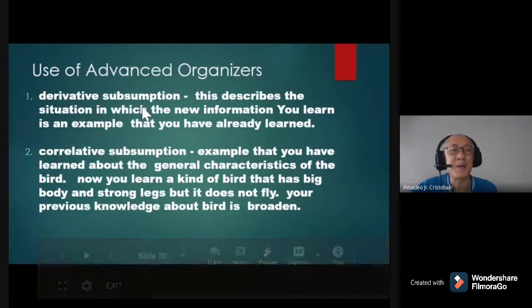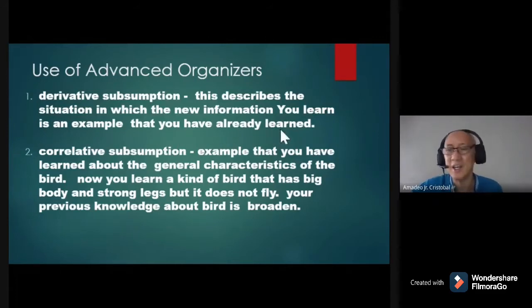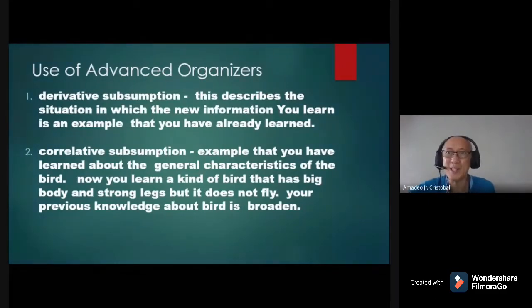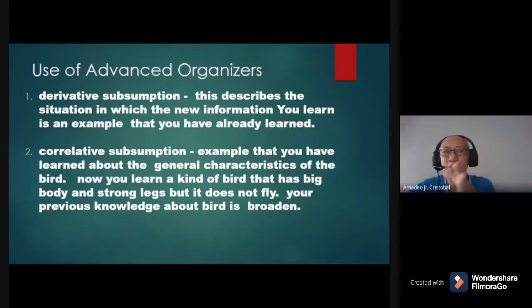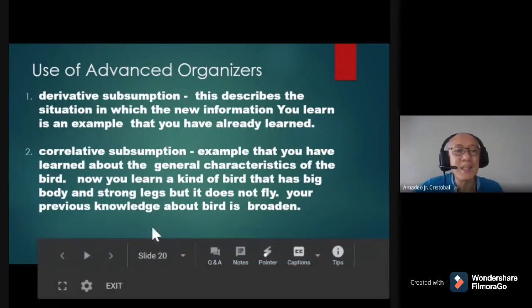The use of advanced organizers includes four types. Number one is derivative subsumption — this describes the situation in which new information you learn is an example of something you have already learned. When we discuss theories today that are connected to past lessons, we call that derivative subsumption, because today's lesson is assumed by the previous lessons.